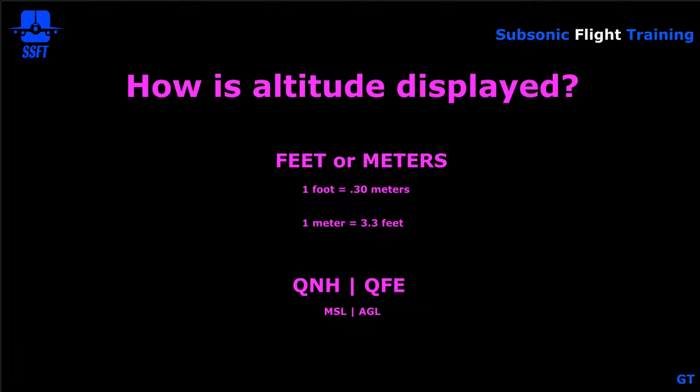QNH and QFE are forms of altimeter settings. QNH references height above mean sea level. If you use QFE, the altimeter references your height above ground level. Most airlines use QNH. If you set the altimeter to QFE, then when you're on the ground your altimeter would read zero. If you set it to QNH, the altimeter will read your height above mean sea level.